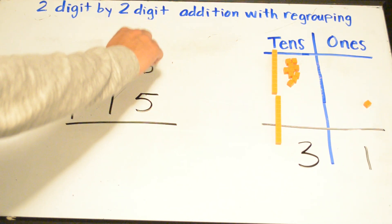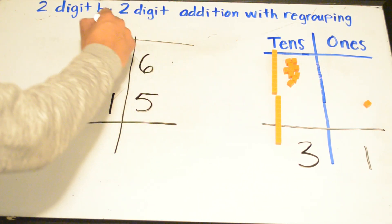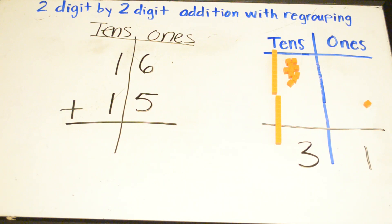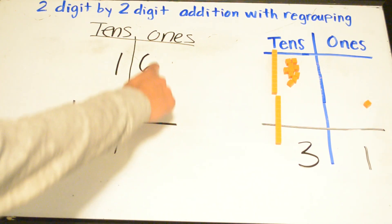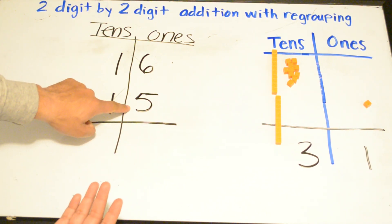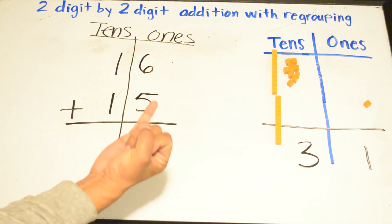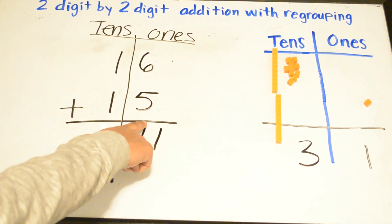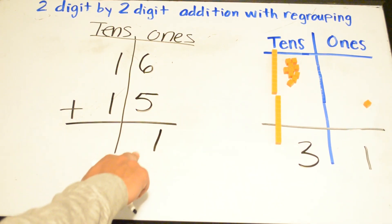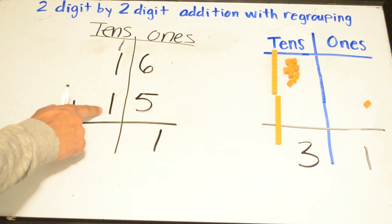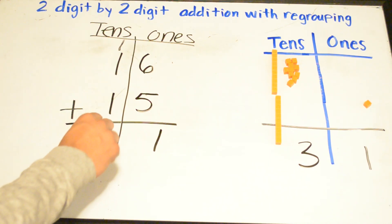The other way: draw a line down the middle — tens and ones. Use your helping hands; six is the biggest number. Clap your hands and say six, add five more: six, seven, eight, nine, ten, eleven. We cannot have more than nine in the ones place, so we take that one and add it to the tens place. Now we have three in the tens place, and the answer is 31.